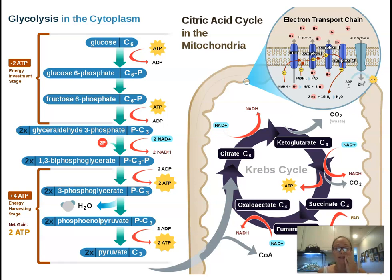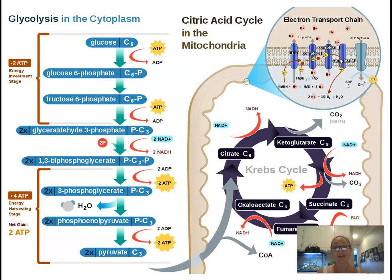The Krebs cycle involves eight steps, each controlled by their own enzymes — another metabolic pathway. The electron transport chain proteins are also enzymes. So when asked about a metabolic pathway, possible answers include glycolysis, fermentation, the Krebs cycle (citric acid cycle), the electron transport chain, or photosynthesis pathways such as the light reactions or the Calvin cycle. Metabolic pathways are fundamentally a series of enzyme-controlled steps.